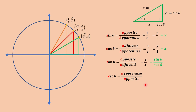For cosecant theta, we have hypotenuse over the opposite. So we have r over y. And that would give us 1 over y. We can also write this as 1 over sine theta because y is equal to sine theta.